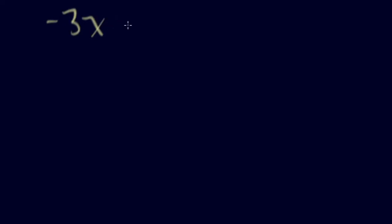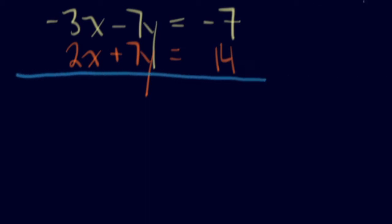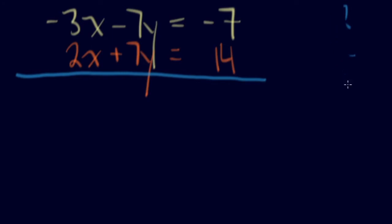Now we're going to look at solving systems of equations by elimination — my favorite method. The idea is you're given a system of two equations and you eliminate one of the variables by adding or subtracting. You line up the x's and y's, then ask yourself: can I add or subtract to eliminate something? Look at the coefficients to see if they match.